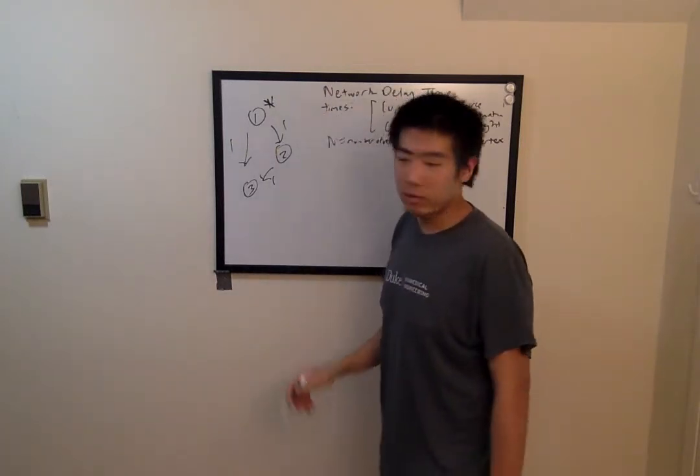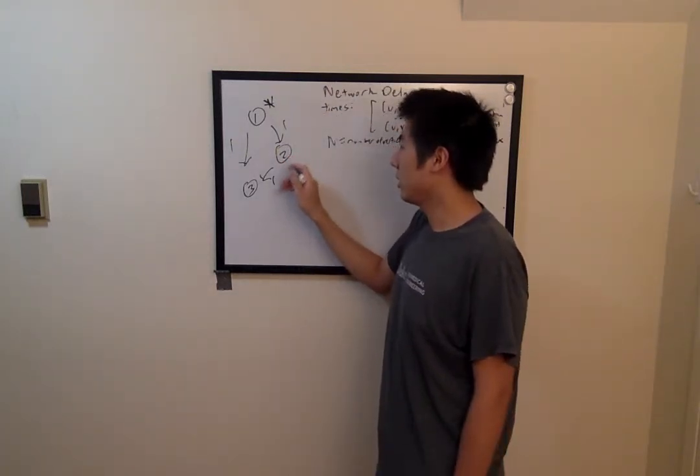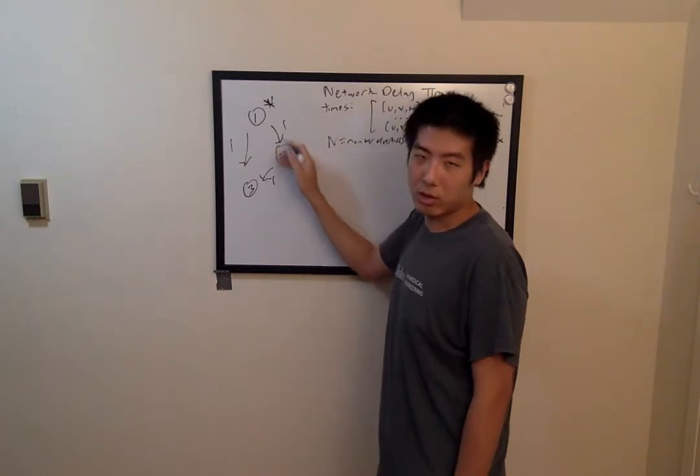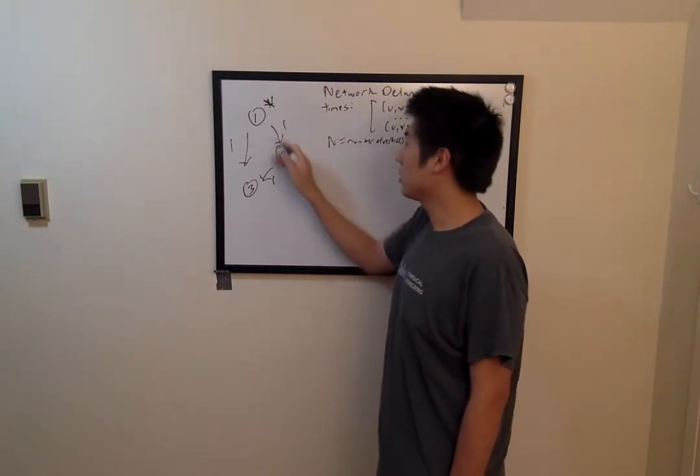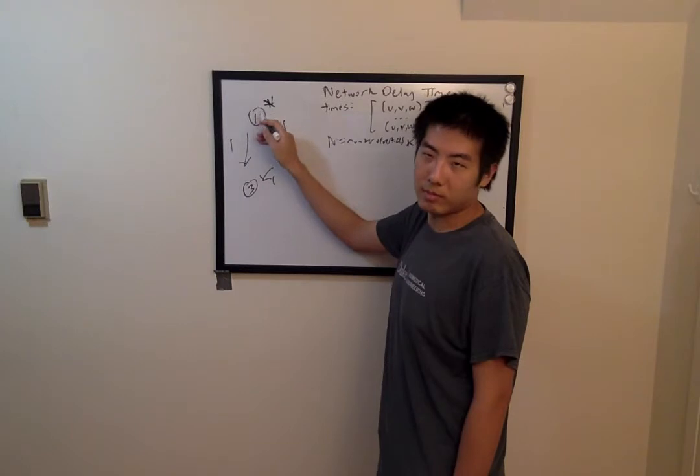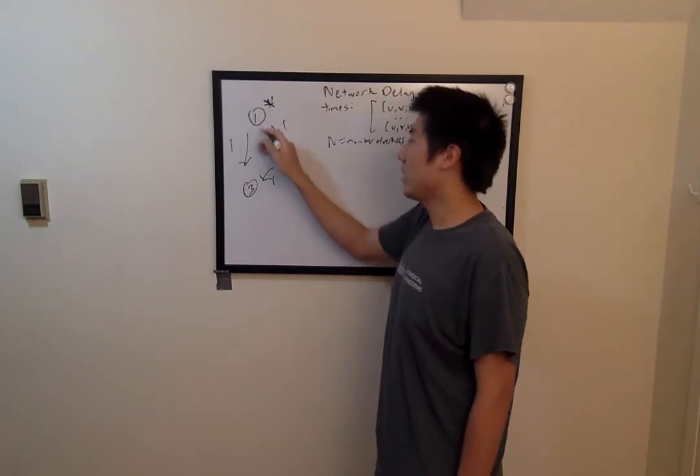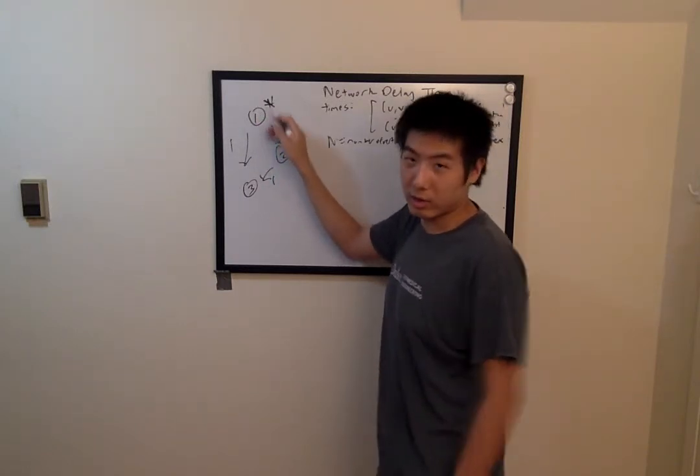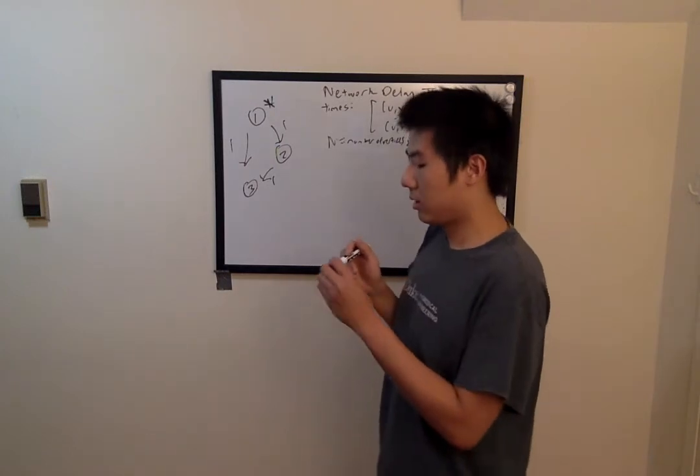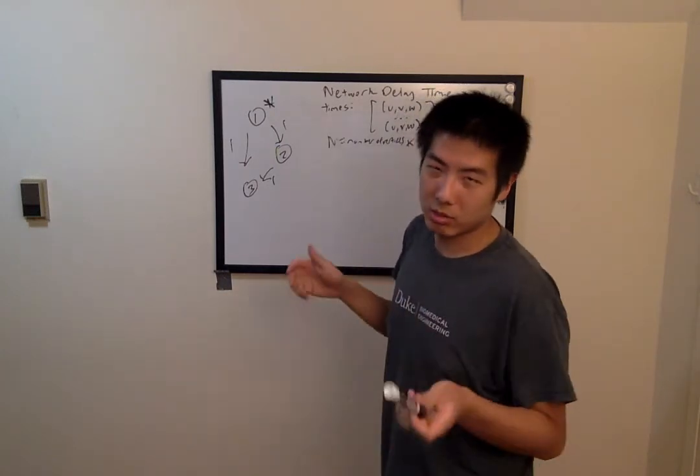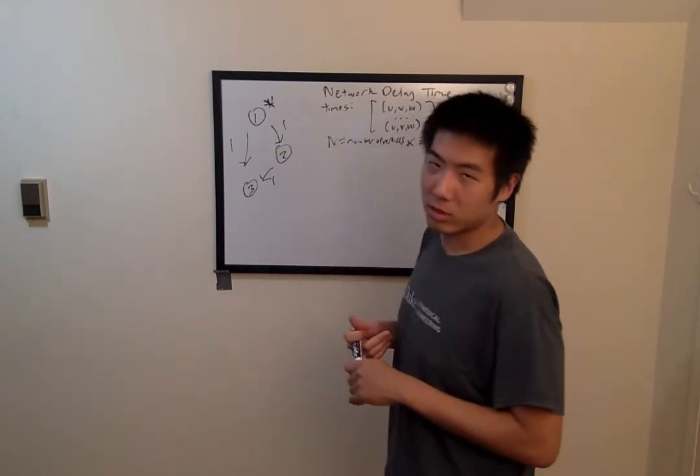If instead we chose 2 as the source vertex and emitted a signal in all possible directions, notice that there is no edge that allows us to access vertex 1, therefore there is no possible solution. And thus we should return minus 1.